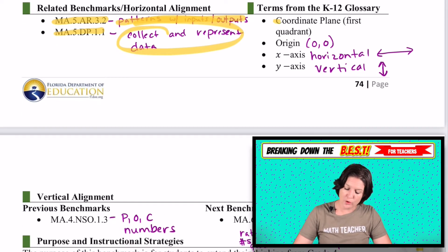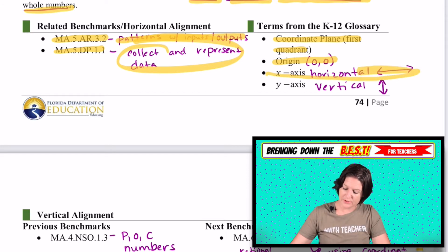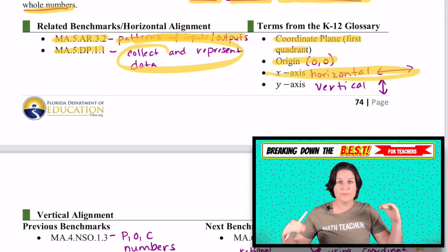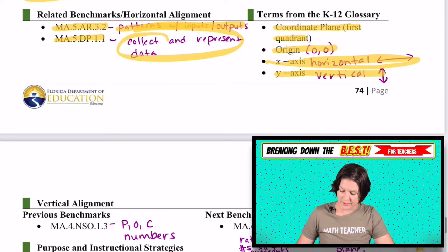Some terms that you need to know: the coordinate plane, the first quadrant, you also need to know about the origin, which is the point (0, 0). It's called the origin because we start there when we're plotting points. So whenever we're plotting a point, we'll say, starting from the origin, we move along the x-axis. So we're always starting at the origin. The x-axis right here is the horizontal movement on the line. And the y-axis describes the vertical movement, the up and down on the coordinate plane.